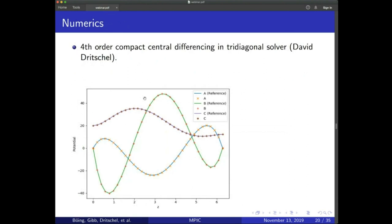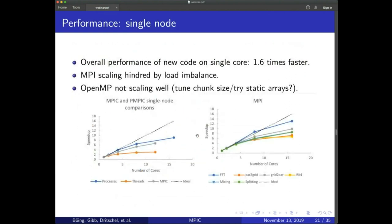We also implemented a fourth-order compact central differencing tridiagonal solver to solve for the vorticity and velocity fields. This slide shows a test comparing the analytically correct values against what our code generates, and they match very well.